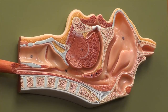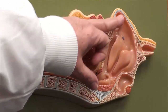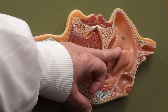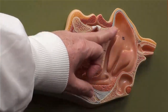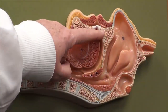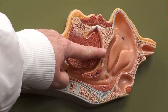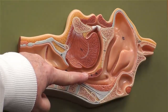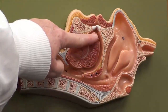Let's take a look at the structures that we can see in a sagittal section through the head. This is the nasal cavity. This is the hard palate. This is the soft palate. This is the tongue.